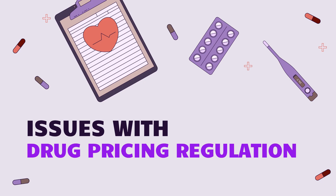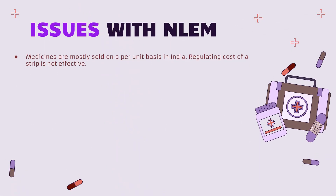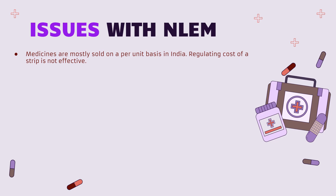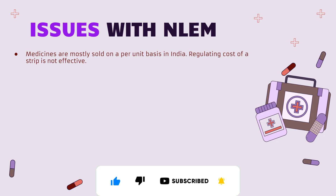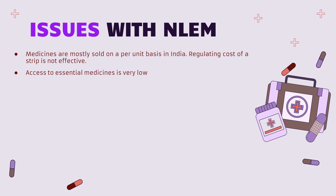Now let's understand the challenges in drug pricing regulation of essential medicines. The first issue is that these medicines are mostly sold on a per-unit basis in India, and regulating the cost of strips is not fully effective because most medicines are sold loosely at the retail level — so the benefit does not necessarily pass to the customer. Additionally, access to essential medicines is very low because there is limited reach from the government. For example, we have the Pradhan Mantri Jan Aushadhi Yojana which promotes generic medicines, but many people do not know about it.